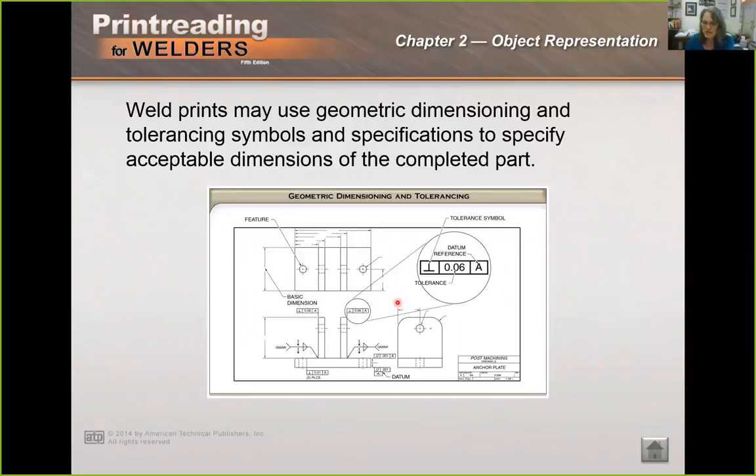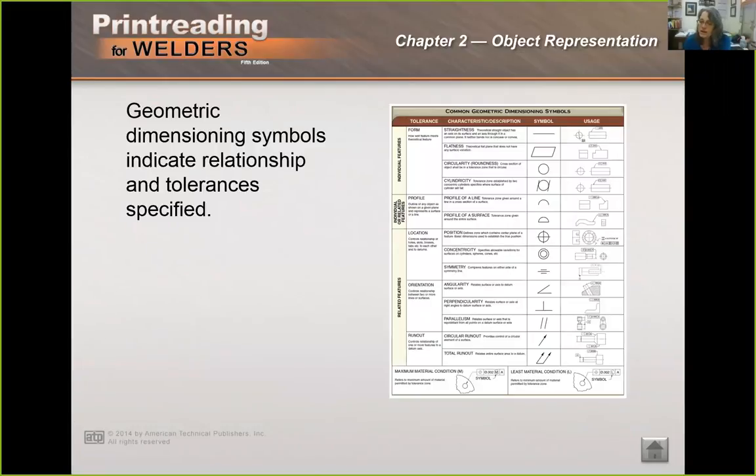And so weld prints may use geometric dimensioning and tolerancing to specify acceptable dimensions for the completed part. Bear in mind if you're a welder creating these objects, sometimes you have to place them and you need to know how exact your measurements need to be. This says that you need to place this thing within six one hundredths of an inch of its specified location. So this is an example of a tolerancing reference. This is where you would be measuring from, so you would be measuring from datum A right here, this guy. And here's another example. These are also welding symbols. Geometric dimensioning symbols indicate relationships and tolerances.